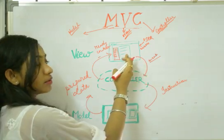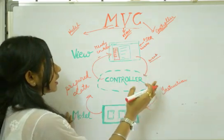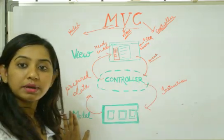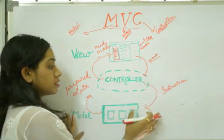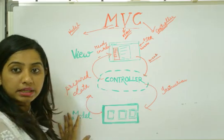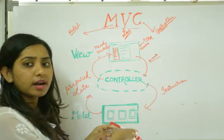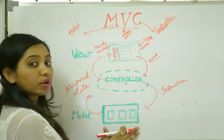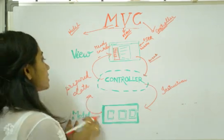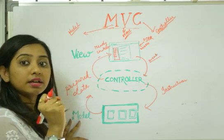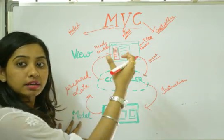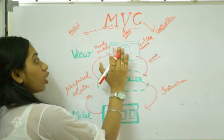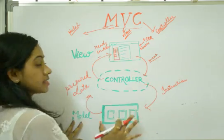To recap: the user interacts with the view and sends user inputs, which are carried forward by an event to the controller. The controller takes care of all the logic, validation, and updation, then sends the required instructions to the model. The model, where we have the application data, modifies and updates it as per the controller's instructions. Once we have the prepared data, it is sent back to the controller, which then sends it to the view where the prepared data needs to be displayed. This is the entire cycle of MVC.